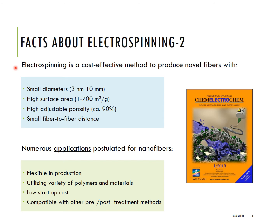Electrospinning is a cost-effective method to produce novel nanofibers with unique properties such as small diameter, high surface area, high adjustable porosity, and small fiber-to-fiber distance. These properties make them useful for several applications because electrospinning is a flexible method — you can use a variety of different polymers and materials. It has the lowest startup cost and is compatible with other pre- and post-treatment methods.